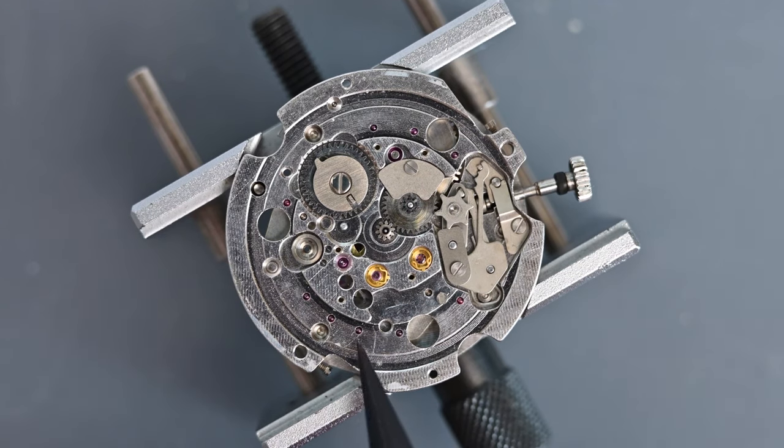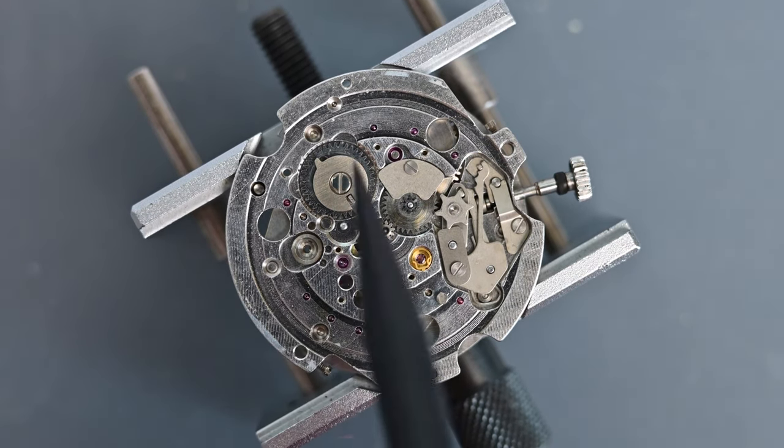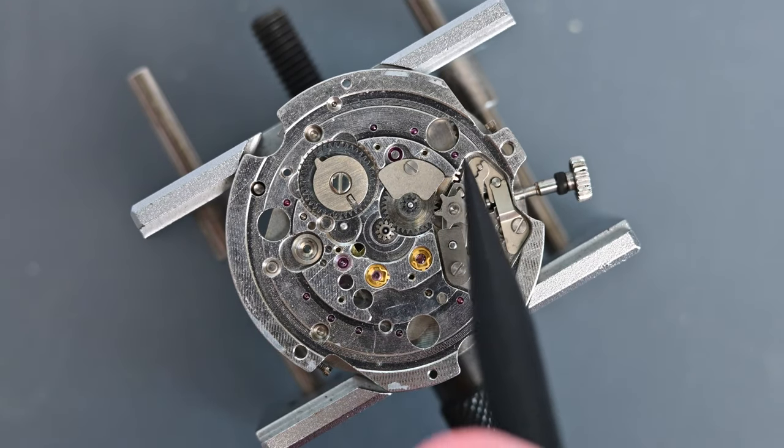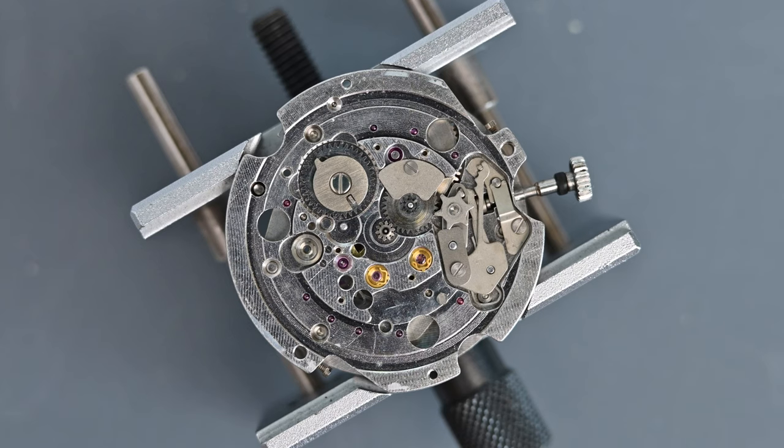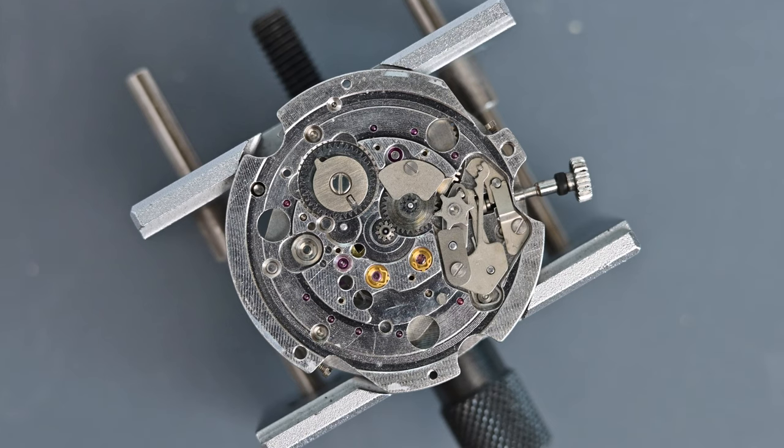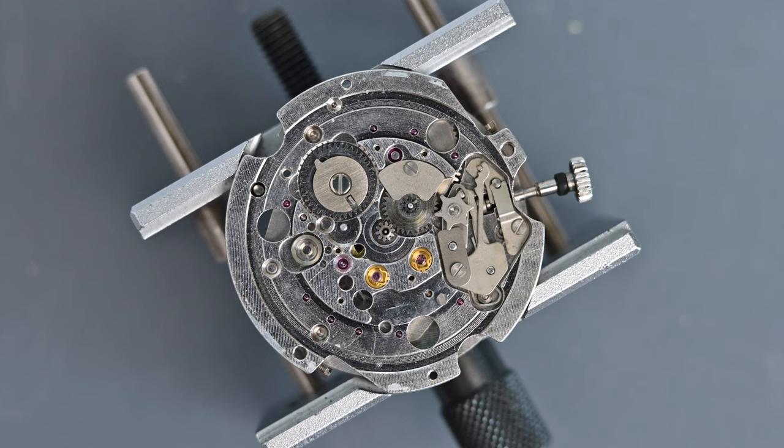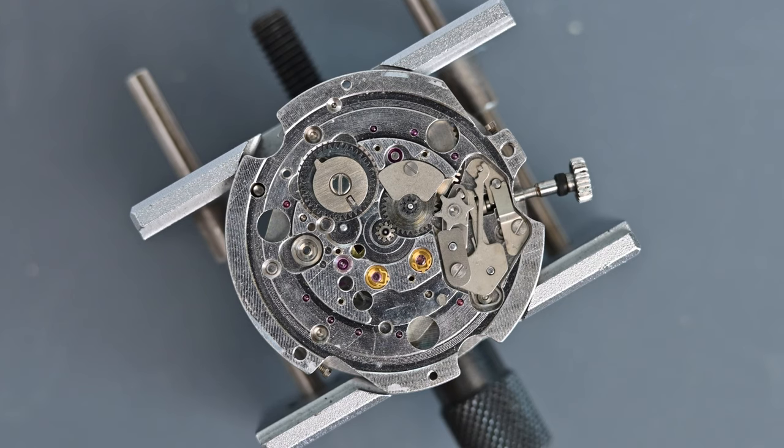One, two, three, four, five, six, seven, eight, nine. There are nine jewels. They look like spherical rubies that are embedded within the main plate, notionally to facilitate the smooth running of the date disc. And there may be an element of truth to that. But again, these jewels serve more of a PR function than an engineering function.